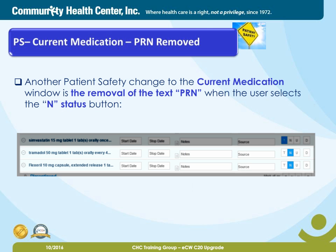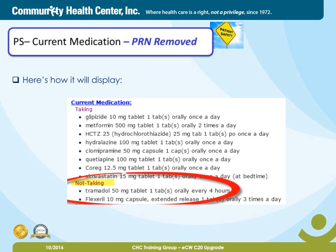Another patient safety change to the Current Medications window is the removal of the text 'PRN' when the user selects the In Status button. Here's how it will display in the progress note — look at the circled text in the screenshot below.